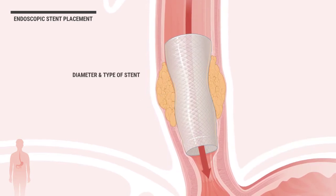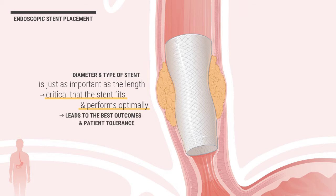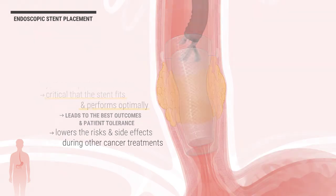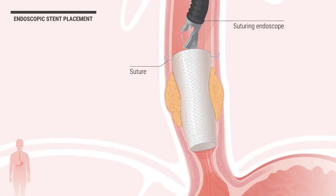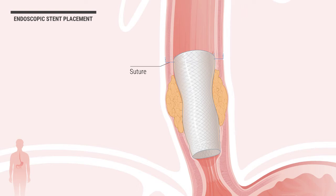The diameter and type of stent is just as important as the length, since it is critical that the stent fits and performs optimally, which leads to the best outcomes in patient tolerance and lowers the risks and side effects during other cancer treatments. Finally, the stent is sutured or sewn in place, preventing further movement. This is especially important for patients pursuing radiation or additional chemotherapy.